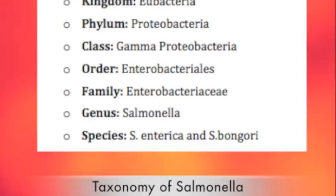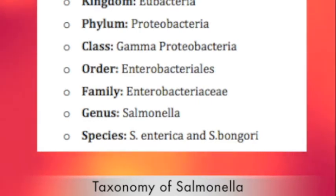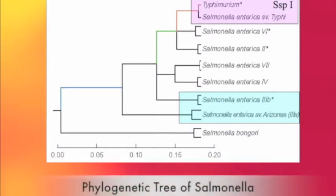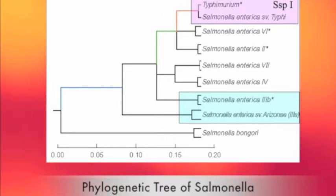The family is Enterobacteriaceae, the genus is Salmonella, and the species are S. enterica and S. bongori. This is a phylogenetic tree of salmonella. It is shown that salmonella is a large genus within the family Enterobacteriaceae that splits up into two species, S. enterica and S. bongori.